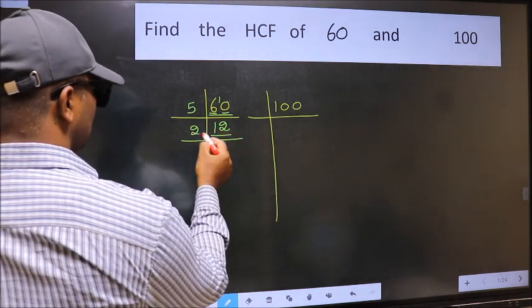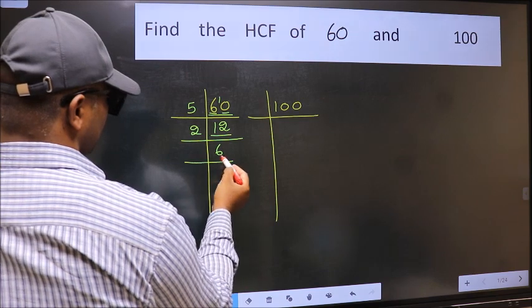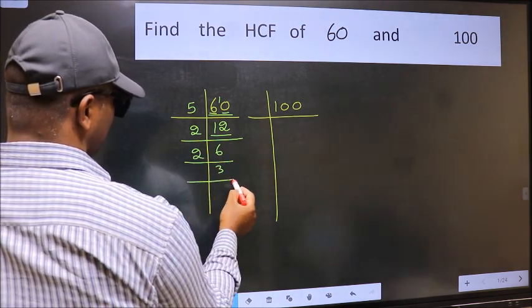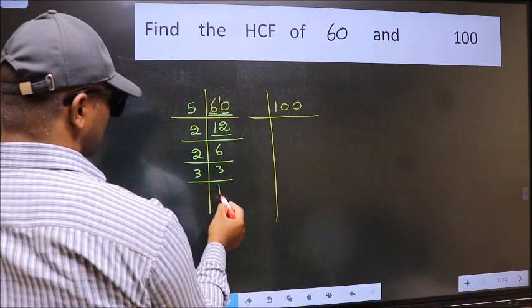Now 12: 2 times 6 is 12. 6: 2 times 3 is 6. Now 3 is a prime number, so 3 once is 3.